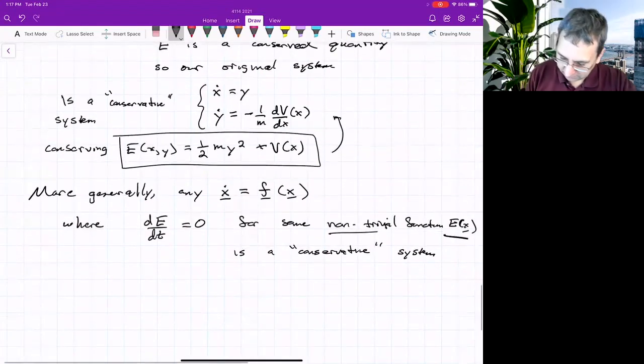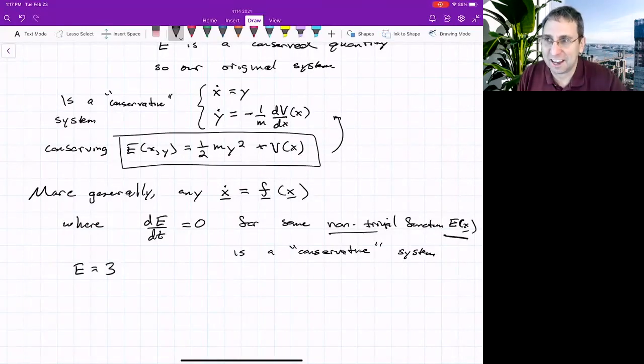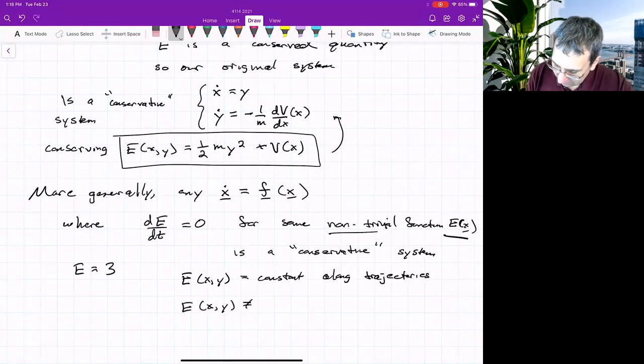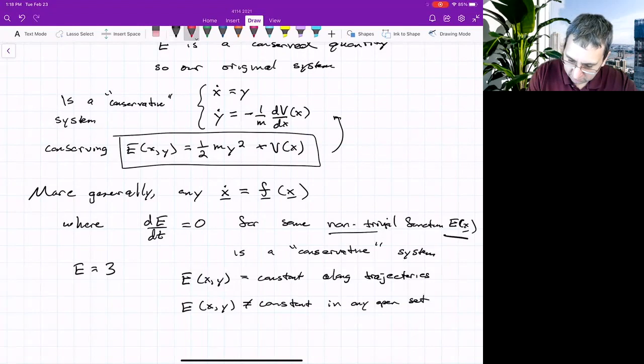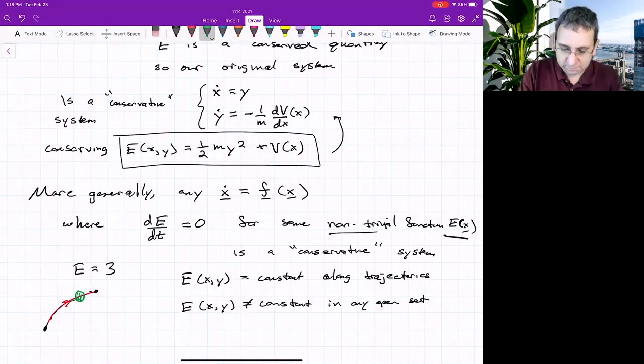The non-trivial means, I'm not just saying that e equals 3. That's a function that everywhere equals 3, but that doesn't really tell us anything. The technical way to put it is that we require that e x y equals some constant along trajectories, and it is not constant in any open set. Meaning, so if I've got, here's a trajectory, e is constant as I go from here to here, anywhere along there. But if I take any open set, that means I've got to have some region, then e will not be constant along that. It has to be different for different trajectories. That's what is meant by non-trivial. e equals 3 would not count. That would be lame.